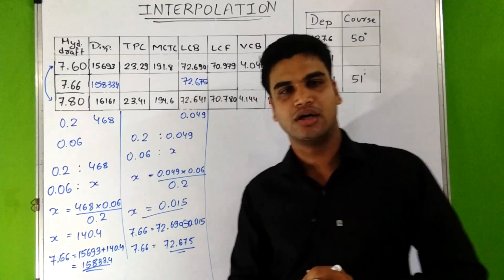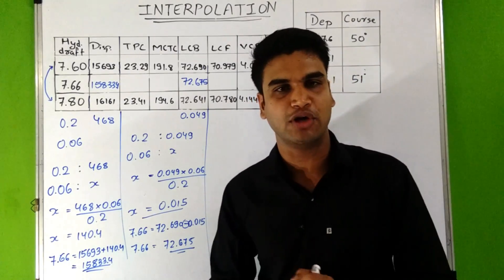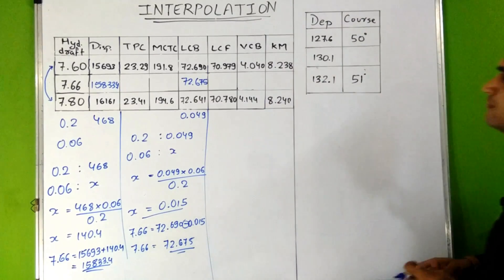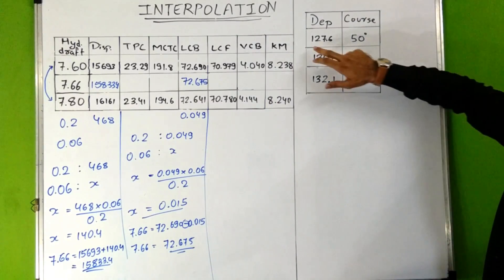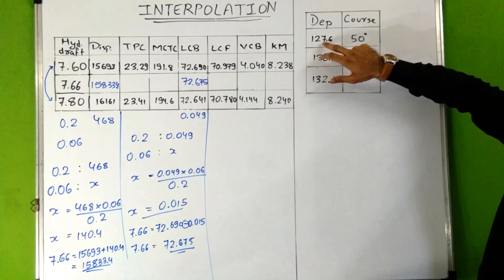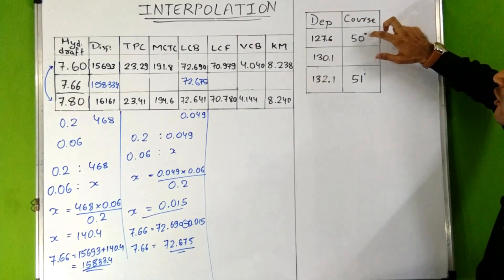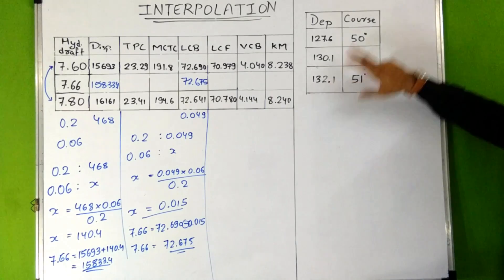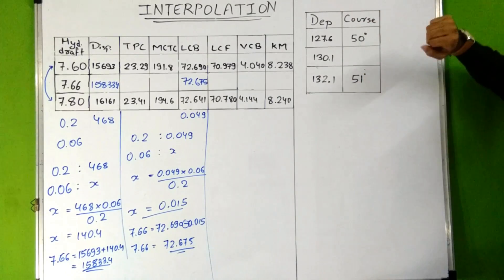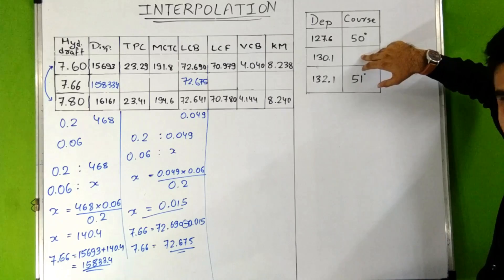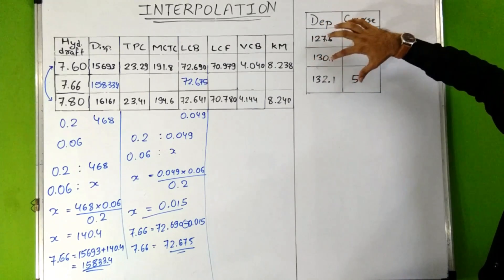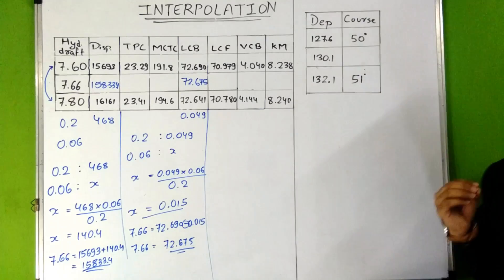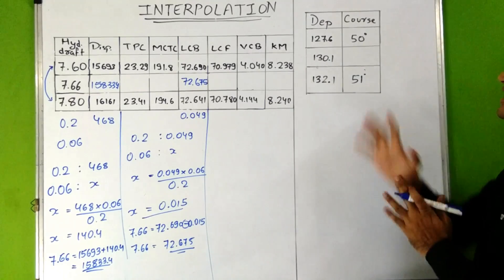Now let's see how to use interpolation for navigation numericals. Here we have a question where when departure is 127.6 the course is 50 degrees, when departure is 132.1 the course is 51 degrees, and we have to find the course for a departure of 130.1.